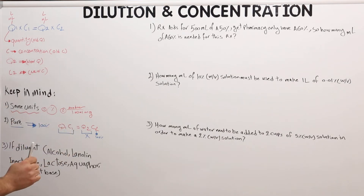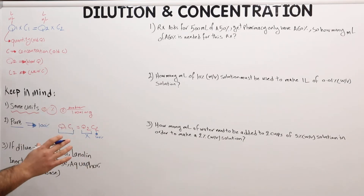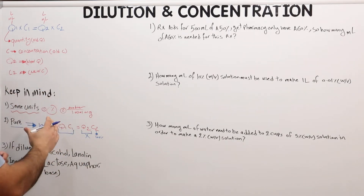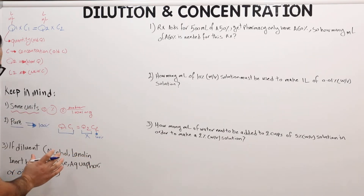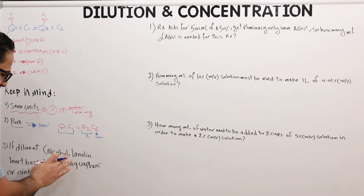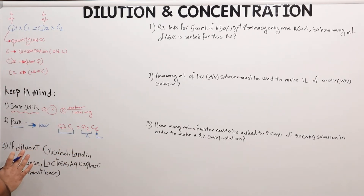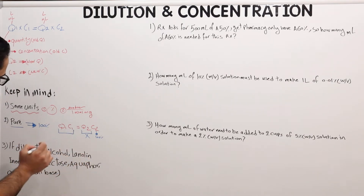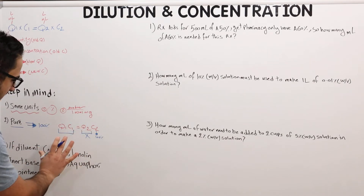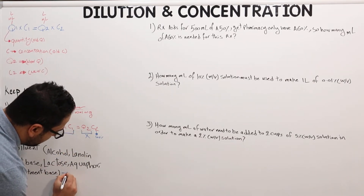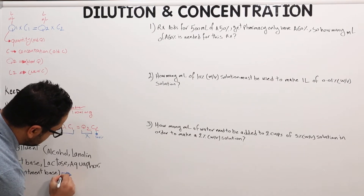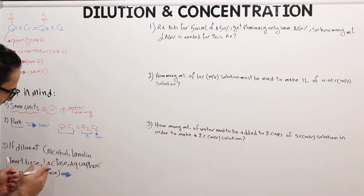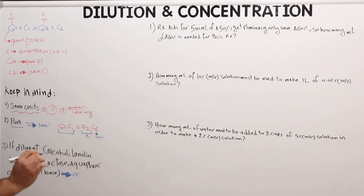Another thing to keep in mind is if there is a diluent. If a question or prescription has no medication — no active ingredients — but mentions a diluent such as alcohol, lanolin, inert base, lactose, Aquaphor, or ointment base, then the concentration for any one of these is zero percent. Notice the big difference between pure and diluent: pure is 100%, diluent is 0%.